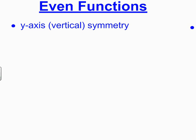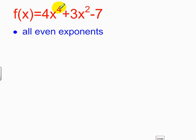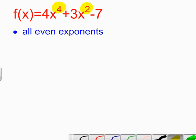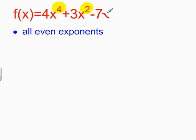Another characteristic of even functions is that their equations have all even exponents. Without graphing it, I can take a look at the equation and see that 4, the power on the first x, is even. 2, the power on the second x, is even. And this constant, minus 7, is actually minus 7 times x to the 0 power, because anything to the 0 power equals 1. So this x to the 0 power is also even. Since the equation has all even exponents on the variable, I know that it is an even function.